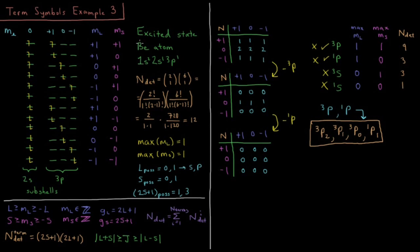We're going to start off with our beryllium atom, and the ground state beryllium would be 1s2, 2s2 for its four electrons, but that would just be a singlet S0. So let's look at the case of an excited state beryllium where we have 1s2, 2s1, 3p1.